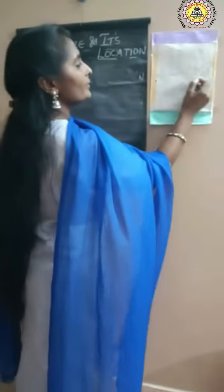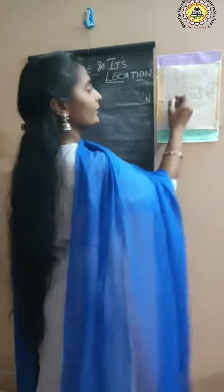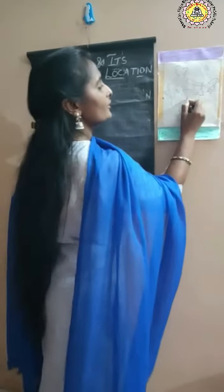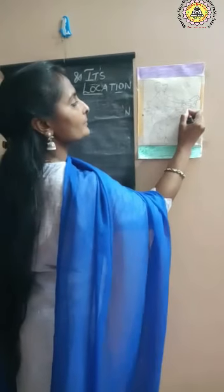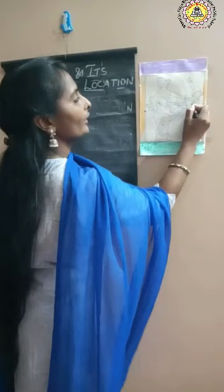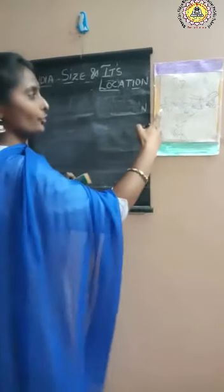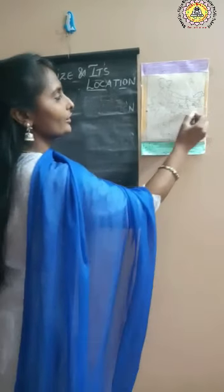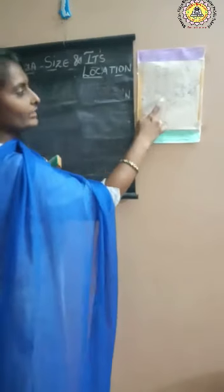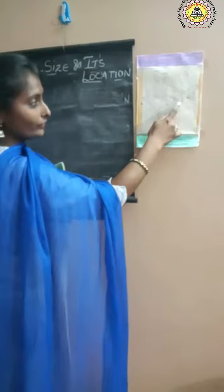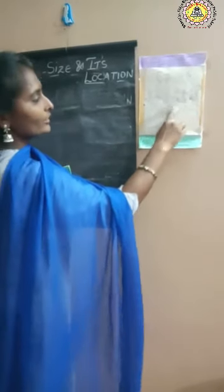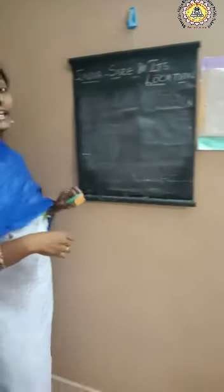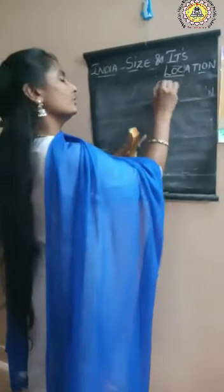The Tropic of Cancer passes through 8 states of India. These are: Gujarat, Rajasthan, Madhya Pradesh, Chhattisgarh, Jharkhand, West Bengal, Tripura, and Mizoram. So these are the 8 states through which the Tropic of Cancer passes.